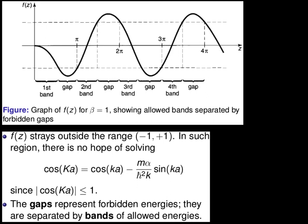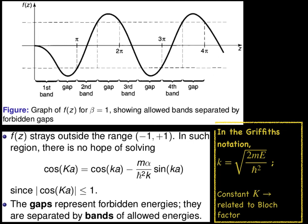In the Griffiths book, the small letter k is related to the energy parameter, while the big letter K is related to the Bloch factor.